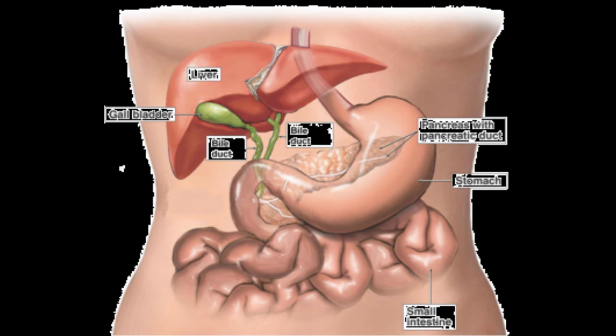Bile or gall is a dark green to yellowish brown fluid, produced by the liver of most vertebrates, that aids the digestion of lipids in the small intestine. In humans, bile is produced continuously by the liver and stored and concentrated in the gallbladder.